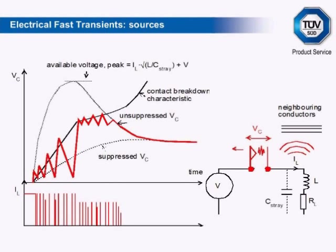The electrical fast transient bursts test subjects the EUT to bursts of transients that test its immunity to environmental disturbances caused mainly by local power switching operations. The transients are called fast to distinguish them from lower frequency surges caused by distant disturbances outside the immediate environment.